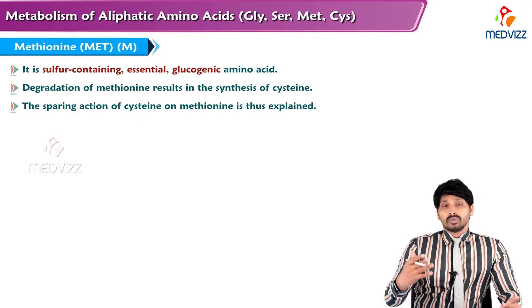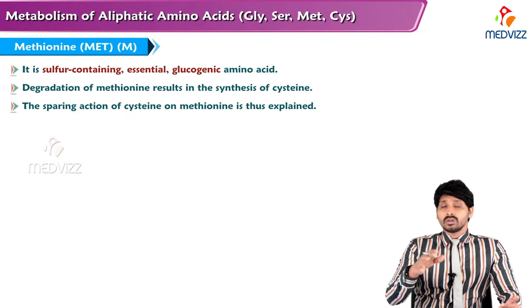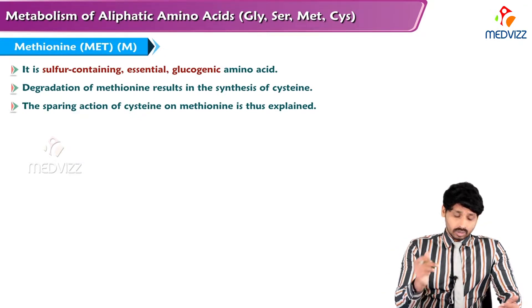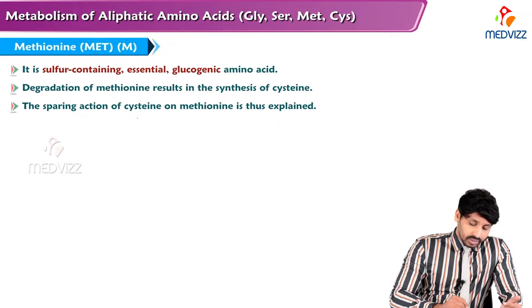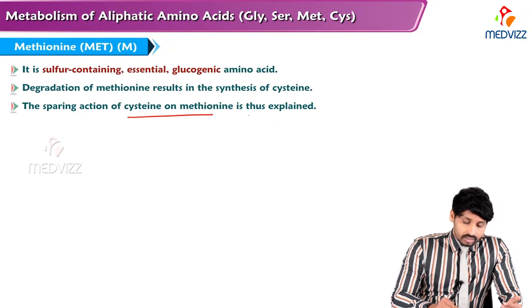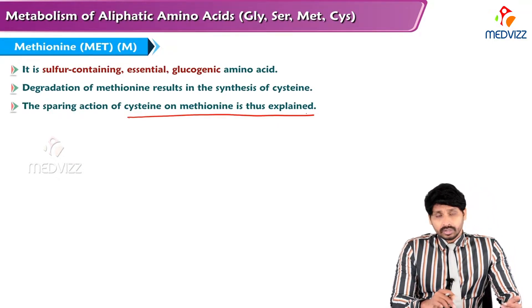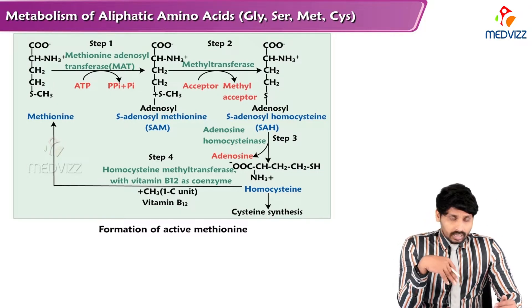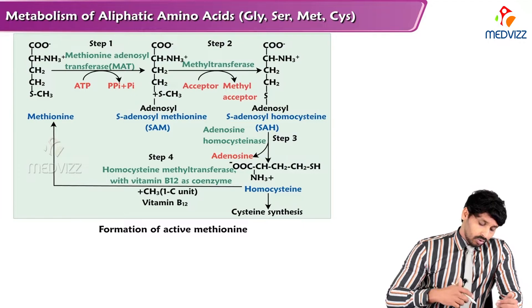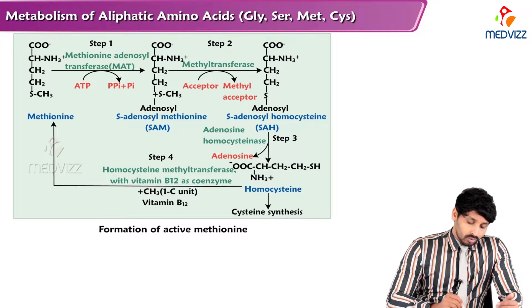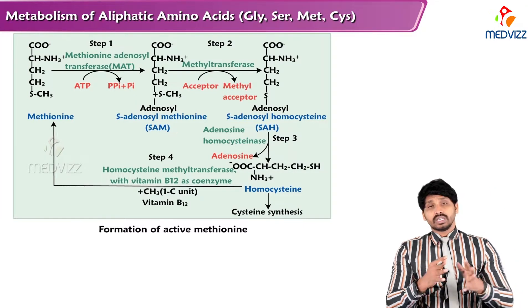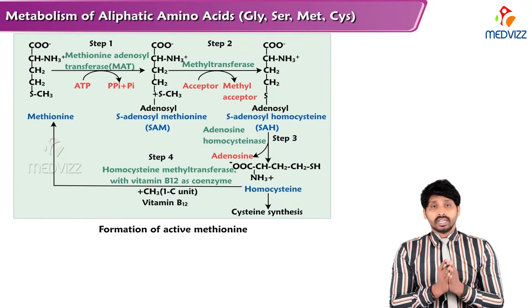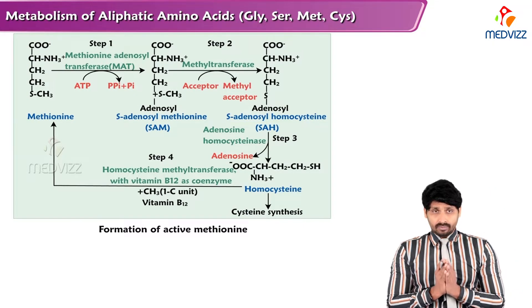Methionine can be converted to Cysteine, which is why Cysteine is a non-essential amino acid — the sparing action of Cysteine on Methionine is thus explained. Looking at the diagram, Methionine is first converted to SAM, which is the active methyl donor in our body.